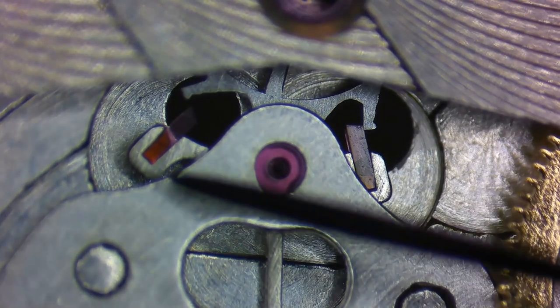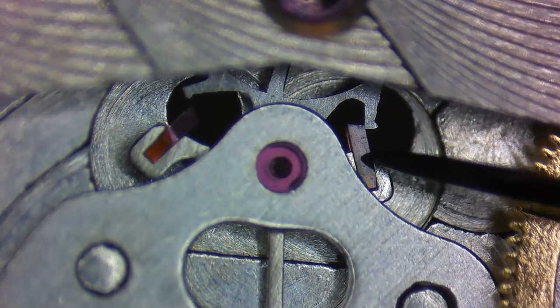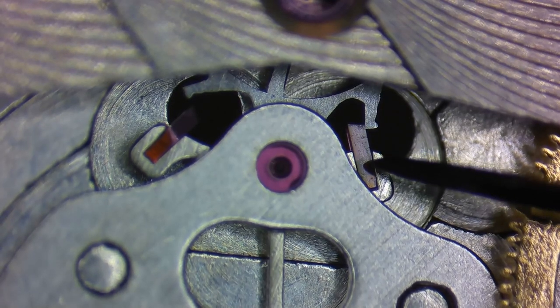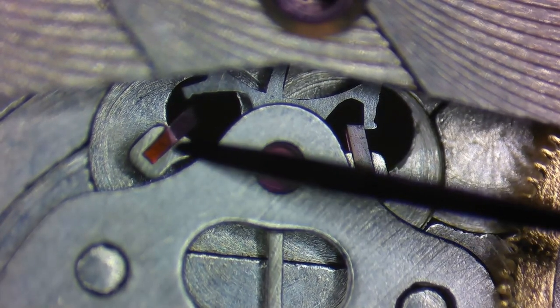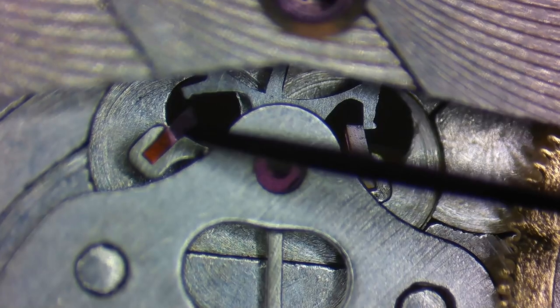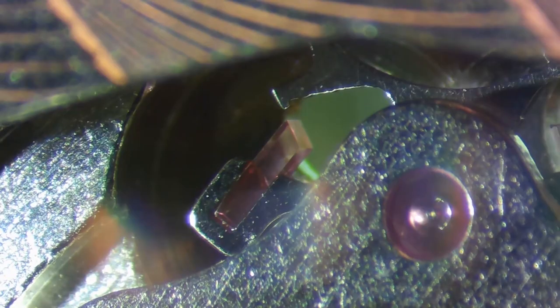Now there's two jewels on the pallet fork. The one as you're looking at it on the right, this is the entry stone. The one on the left is the exit stone, and that's the one we're going to lubricate. Now take your clean oiler, pick up a tiny amount of grease on the tip, and apply it to the center of the pallet stone.